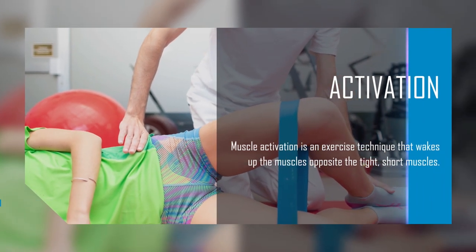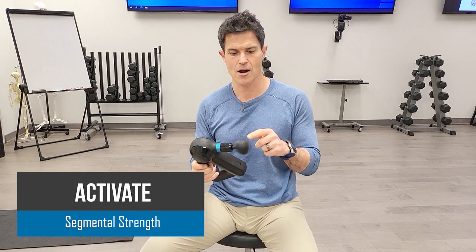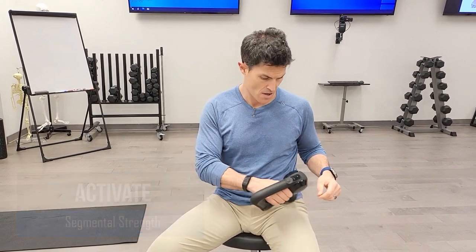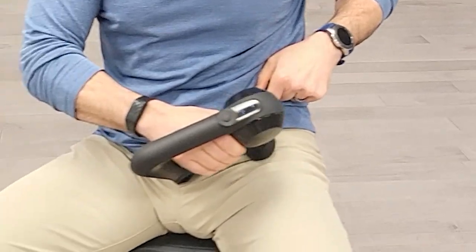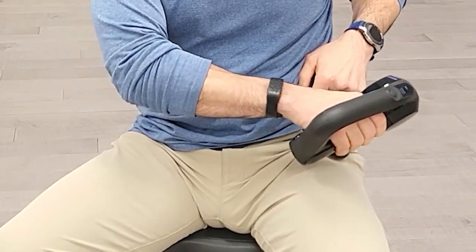We're going to stimulate our hip flexors with a percussion gun — this one is a Therabody model. Set it to a higher percussion setting; this one has four settings, so we're going to setting three. We'll use a little more force on the muscle. The hip flexors are underneath your hip bone, so I'm going to go just under that hip bone and drag the gun from medial to lateral, pushing into the tissue — higher percussion, a little more force, letting the shaft go deep into the tissue.